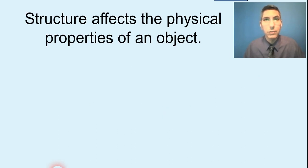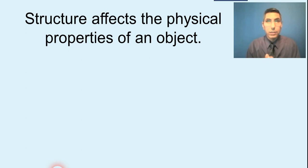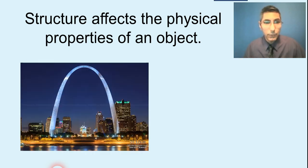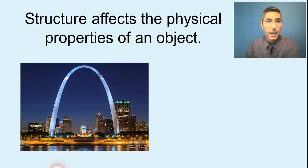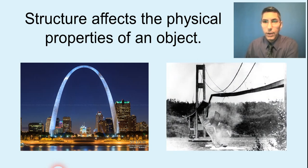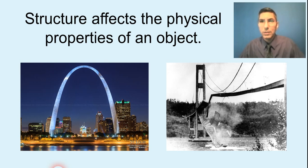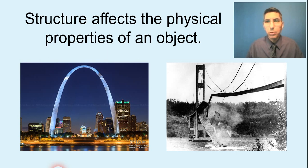When we talk about the subject of molecular structure, it is actually very important to us in chemistry because structure affects the physical properties of an object. This occurs on the molecular level, very tiny, but it also affects things on a much larger scale. For example, the Gateway Arch in St. Louis stands up on its own even though the legs are relatively thin — it's very durable because of its structure. On the other hand, the Tacoma Narrows Bridge unfortunately collapsed back in 1940, and it had a lot to do with the way it was built. The structure and shape of an object matters, and that's why it's important in chemistry to visualize what molecules actually look like.